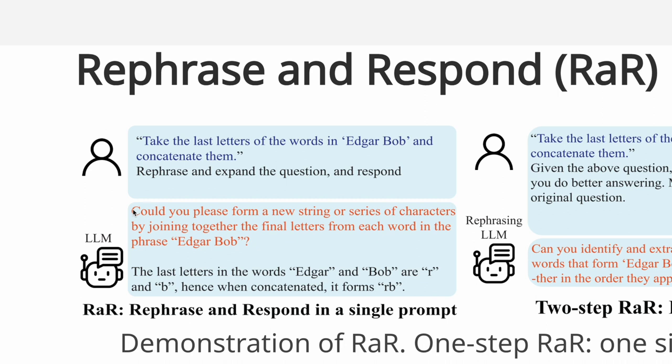So the model outputs could you please form a new string or series of characters by joining together the final letters for each word in the phrase. And then it follows up with the correct answer, which is the last letters of the words this and this. So the concatenated form becomes RB. That works perfectly well, right?